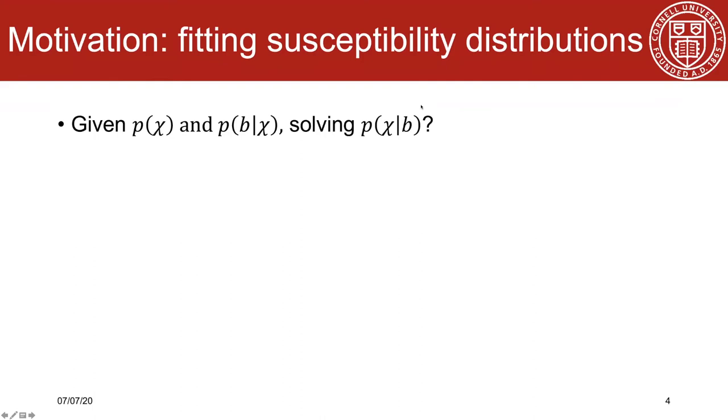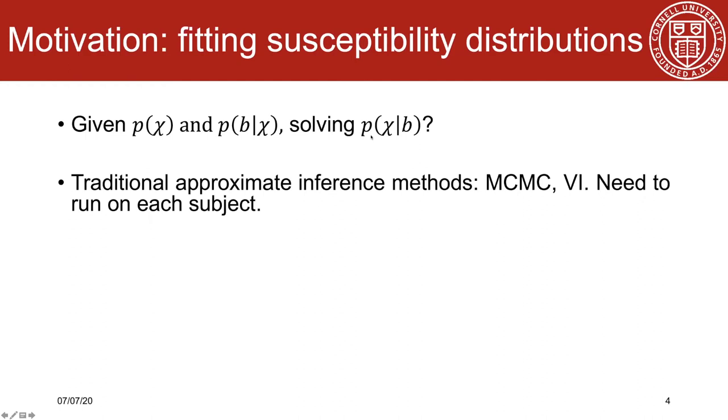Given the prior and likelihood distribution, can we do one step further to solve the whole posterior distribution of chi? If so, it will quantify the uncertainty in the solution and may have some clinical implications. To do that, some approximate inference methods can be used, such as Markov Chain Monte Carlo, variational inference, etc.